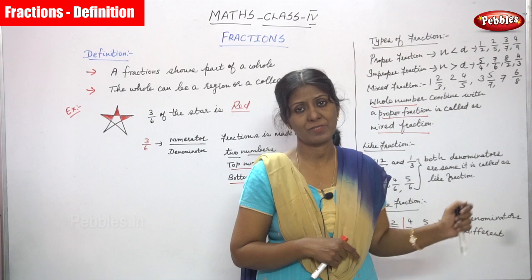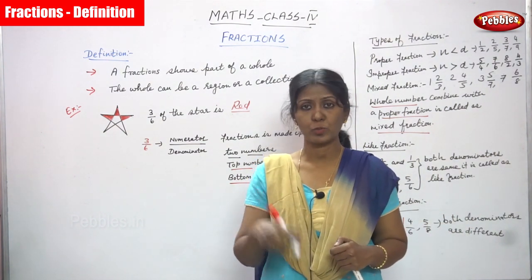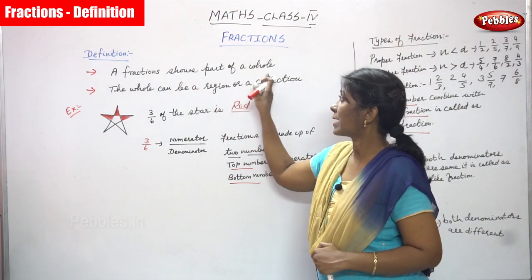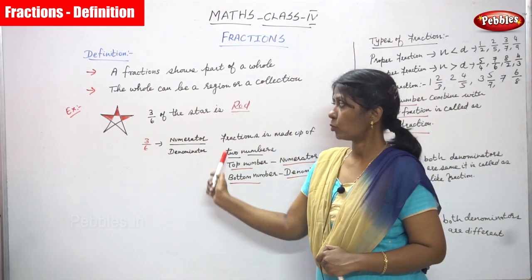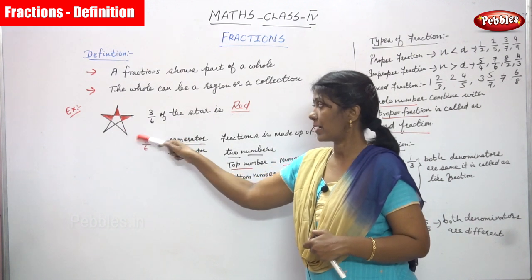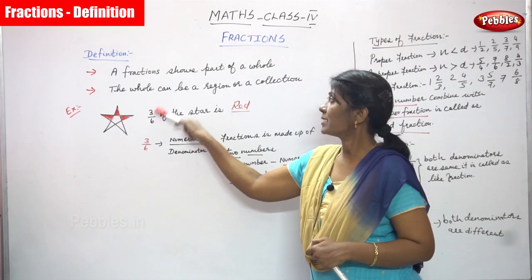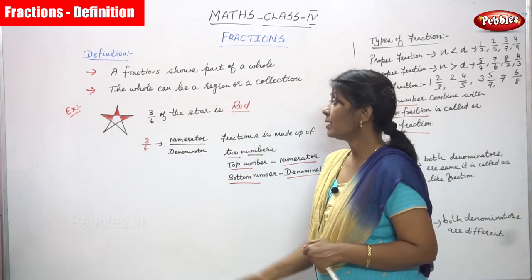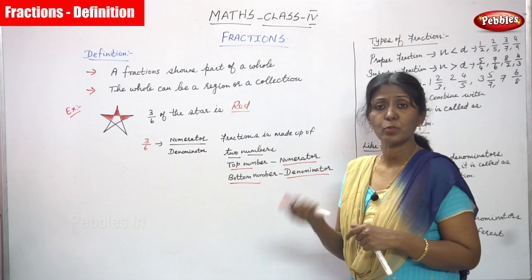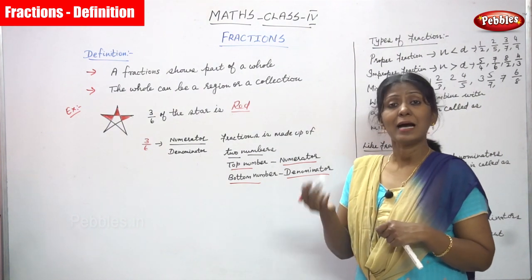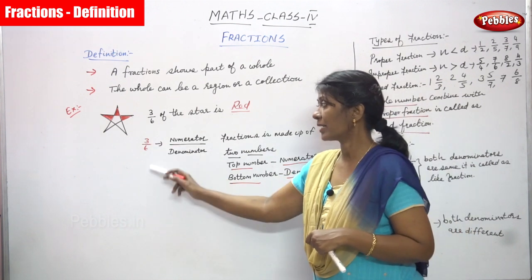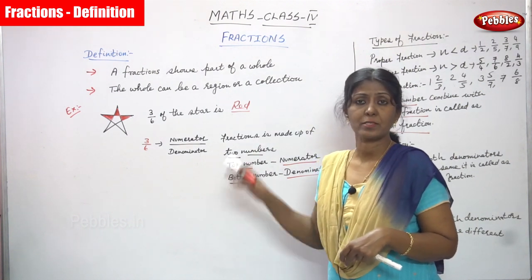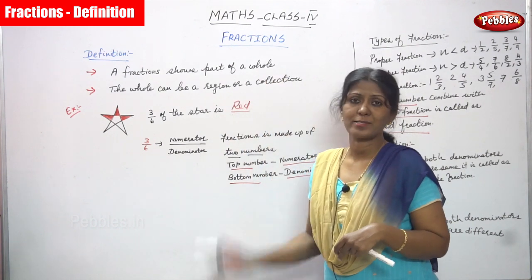In the next class we will do some exercises and examples on fractions. To summarize: a fraction shows a part of a whole; the whole can be a region or a collection. The star example showed six parts with three shaded — that is 3 by 6. A fraction is made up of two numbers: the top number is the numerator and the bottom number is the denominator. These are the major and important points of fractions — don't forget these rules.